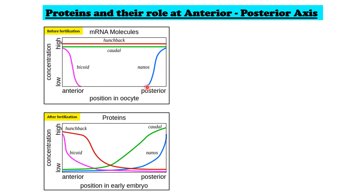Just like bicoid and nanos, other maternal genes such as hunchback and caudal are also important for anterior-posterior axis formation. Hunchback and caudal mRNAs are synthesized in the nurse cell and transported to the oocyte, but unlike bicoid and nanos they are distributed ubiquitously in the syncytial blastoderm. This graph represents the mRNA distribution of these four genes — bicoid, hunchback, caudal, and nanos — in the oocyte before fertilization. Bicoid mRNA is primarily present at the anterior end and decreases toward the posterior. Nanos mRNA is primarily present at the posterior end and its concentration decreases toward the anterior, eventually becoming negligible.